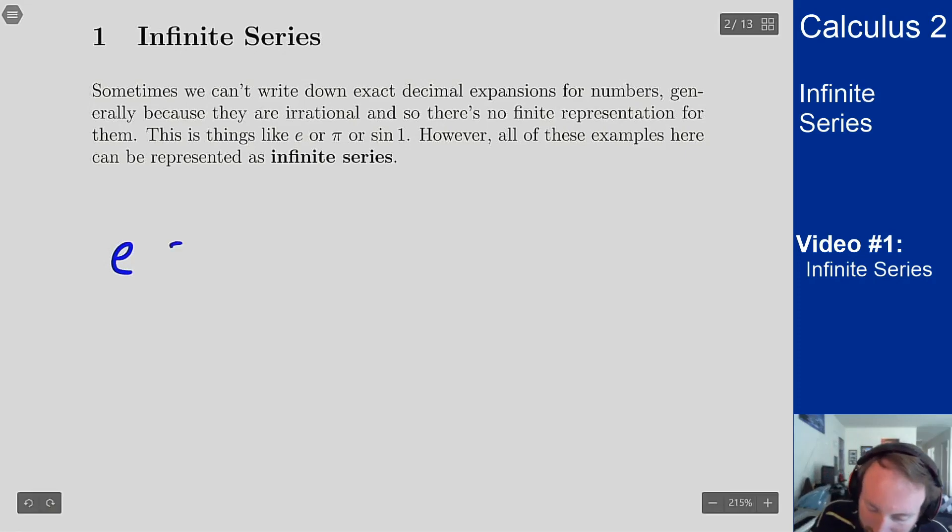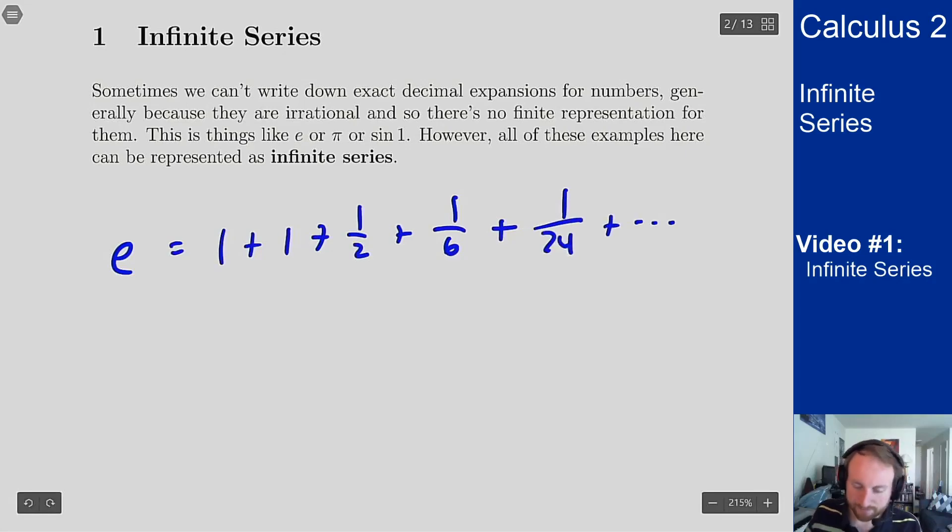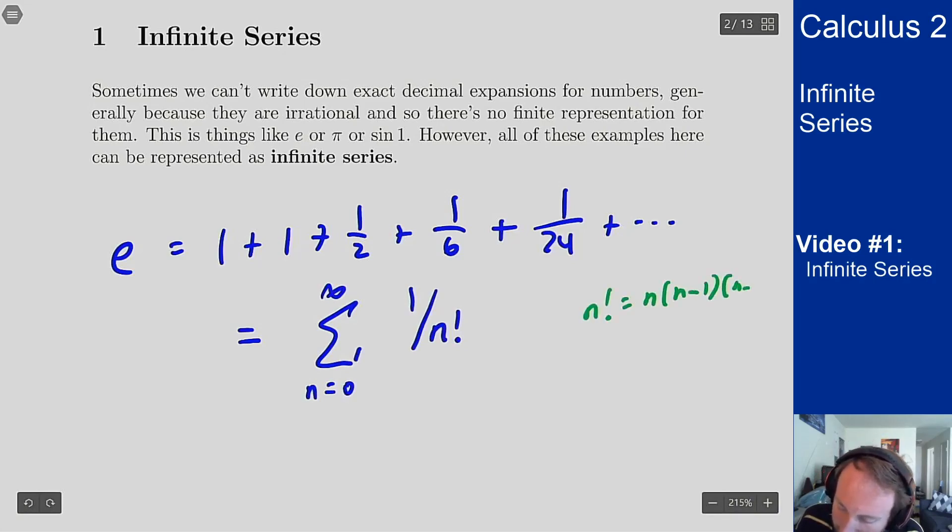I can write e as 1 plus 1 plus 1/2 plus 1/6 plus 1/24 and the series repeats, which since this is a sum we can write using summation notation, but now because we're going to think about taking infinitely many terms here, I'm going to have a sum with infinity as the upper limit. This is 1 over n factorial, where n factorial is n times n minus 1 times n minus 2 all the way down to times 2 times 1.